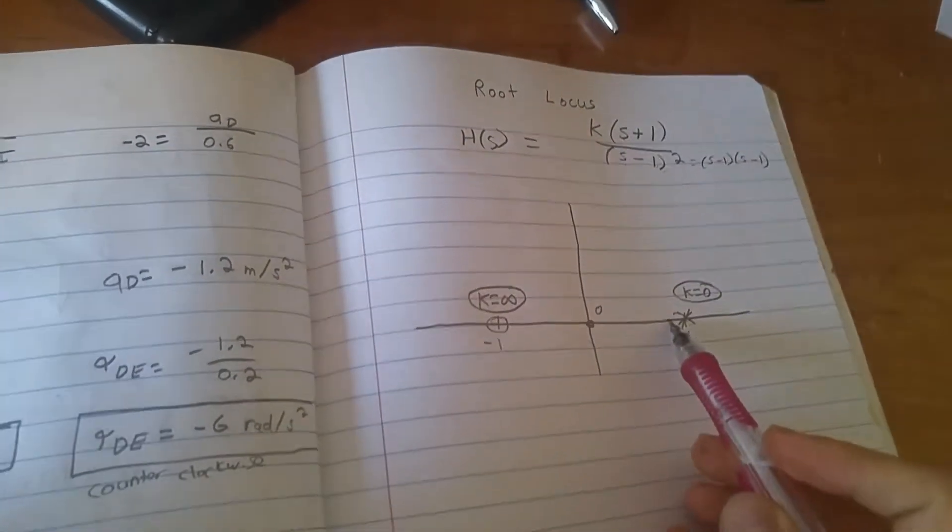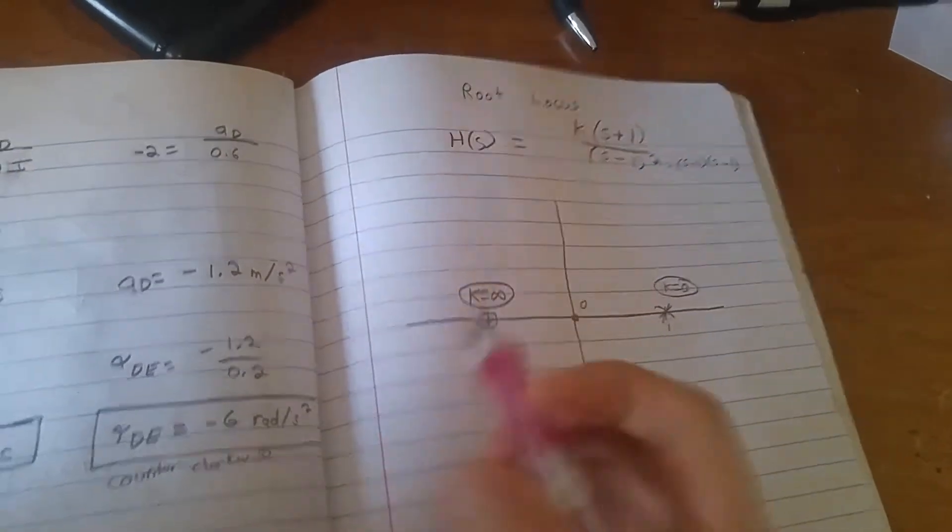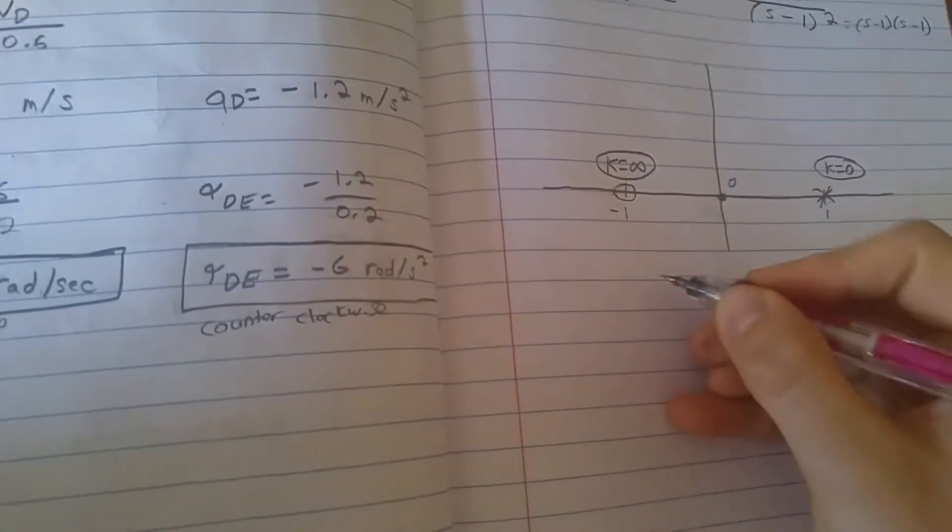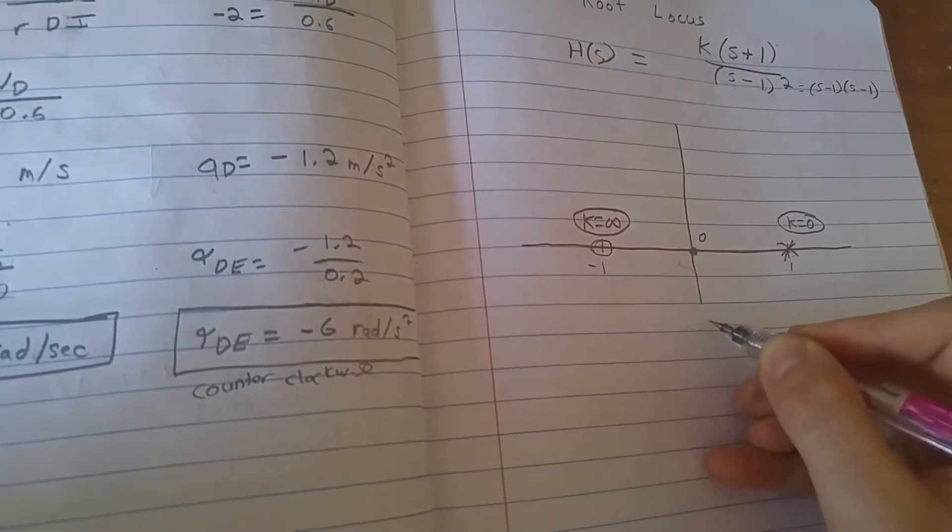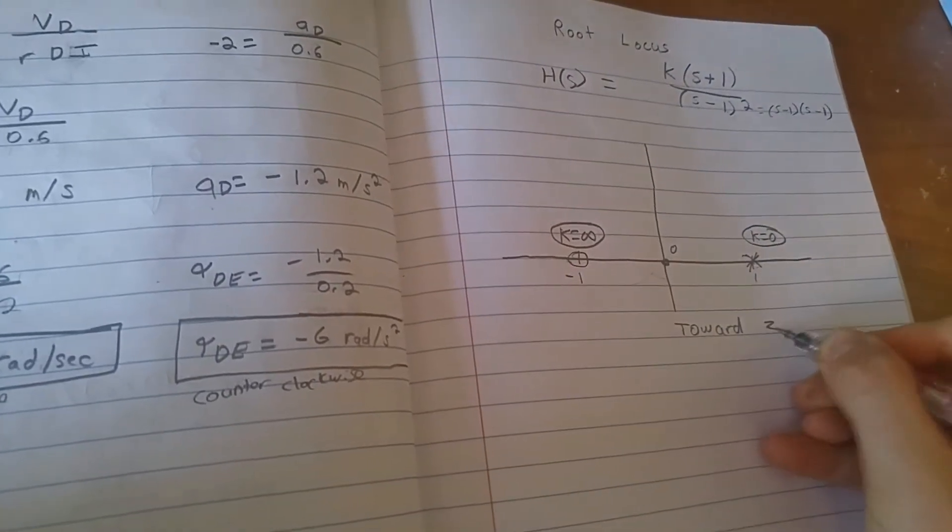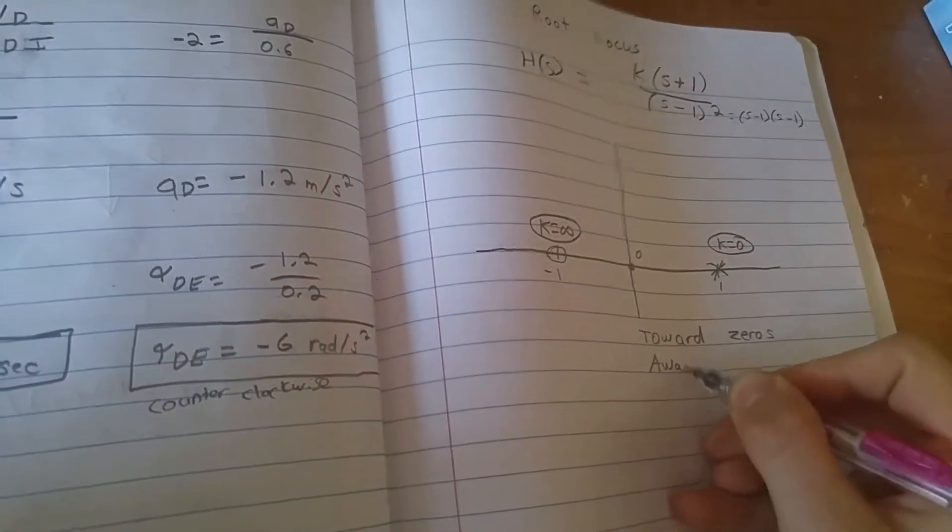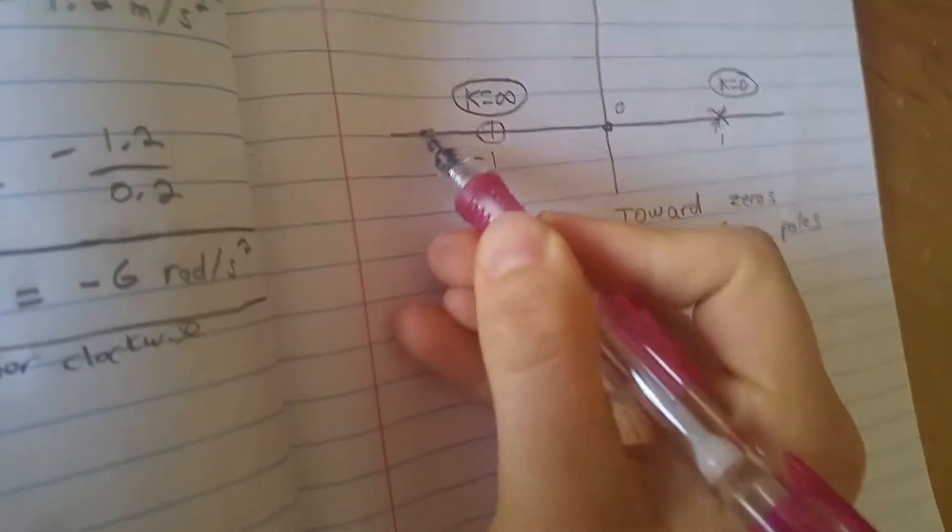There's two poles here. That means it doesn't exist here, it doesn't exist here, but it exists from here on out. So I'm going to go ahead and draw this. Remember when you're doing the root locus that it always goes away from the poles and towards the zeros. Towards zeros, away from poles. So I'm just going to go ahead and draw the arrow going towards the zero.